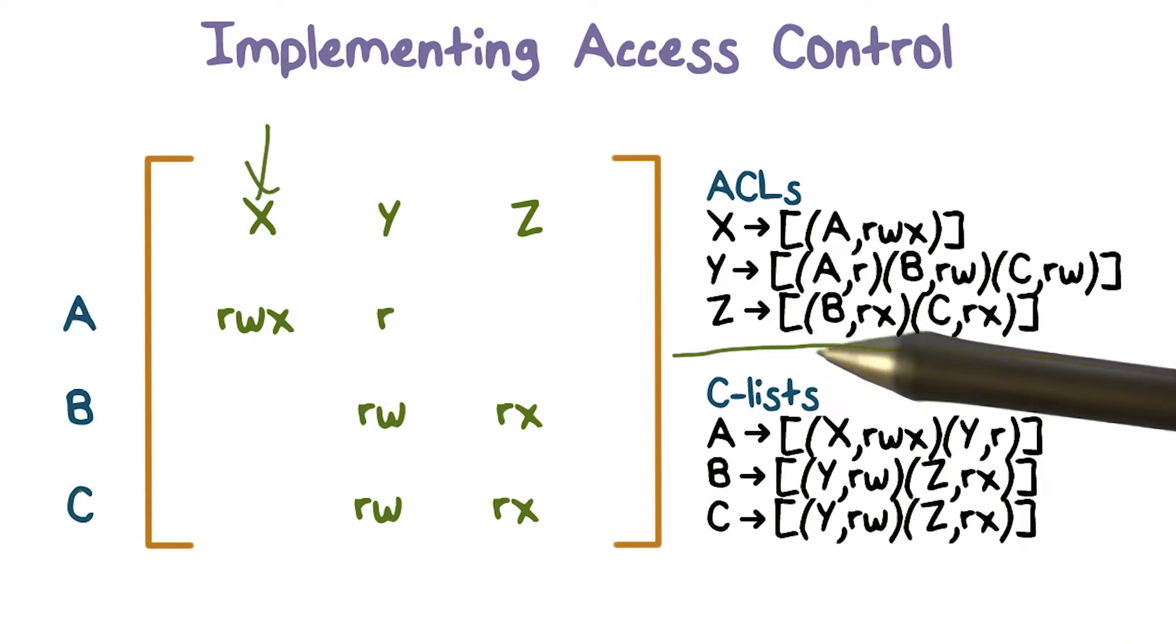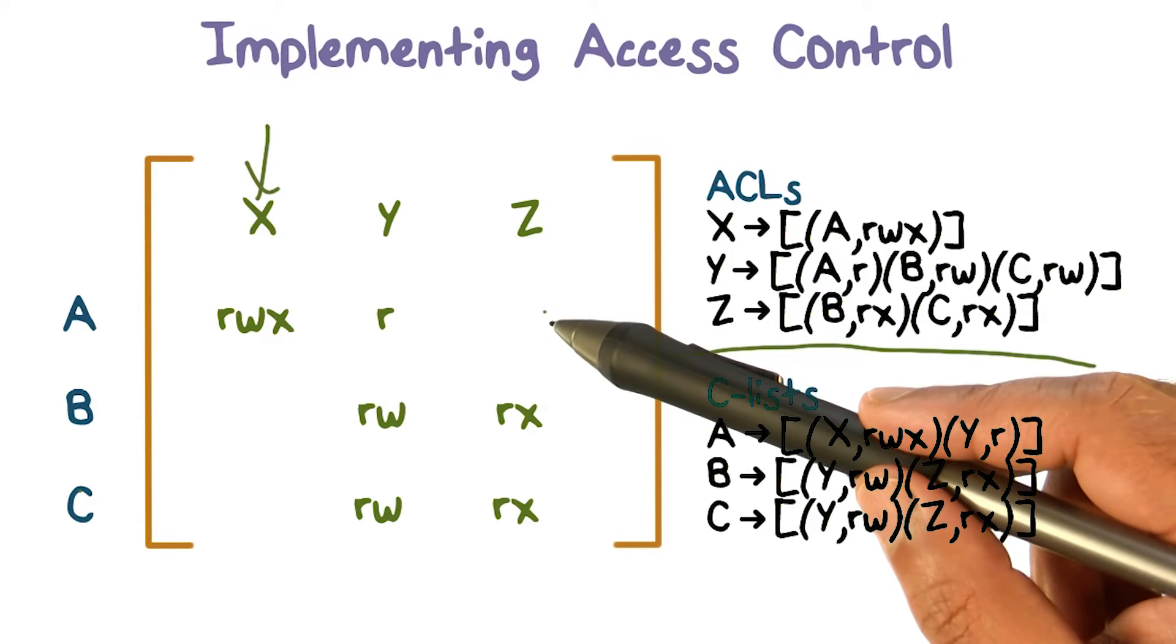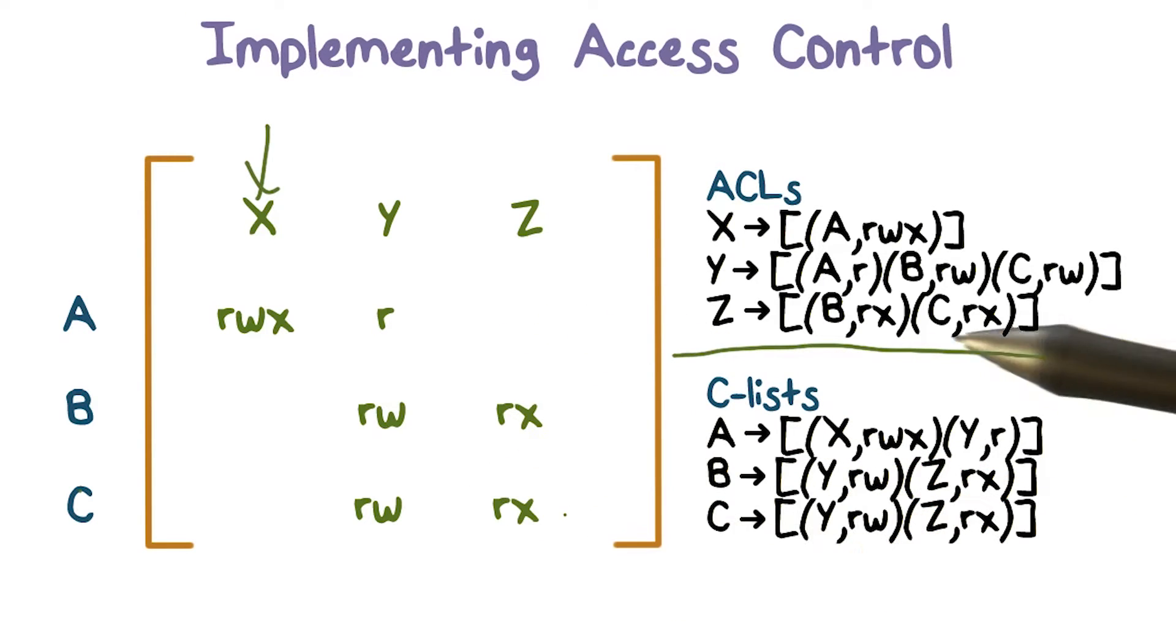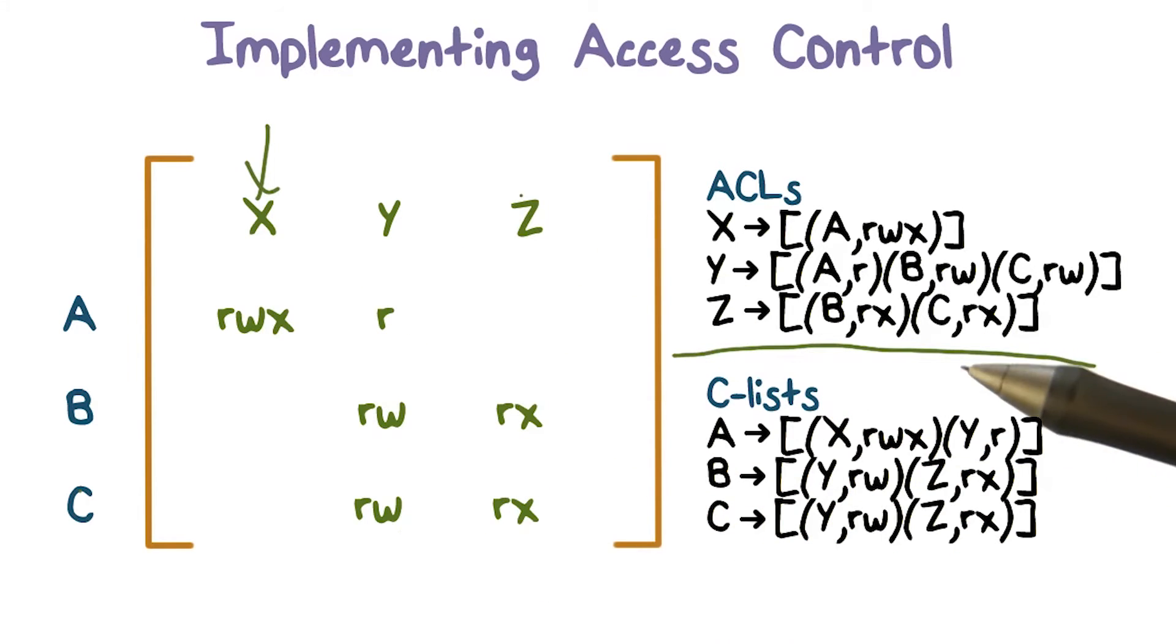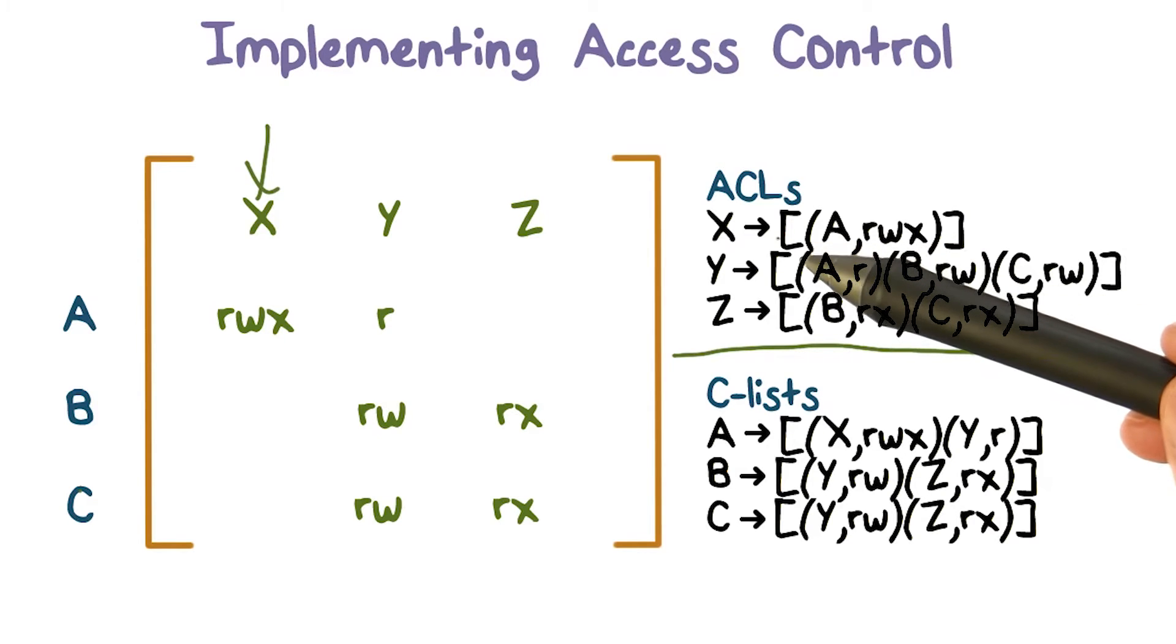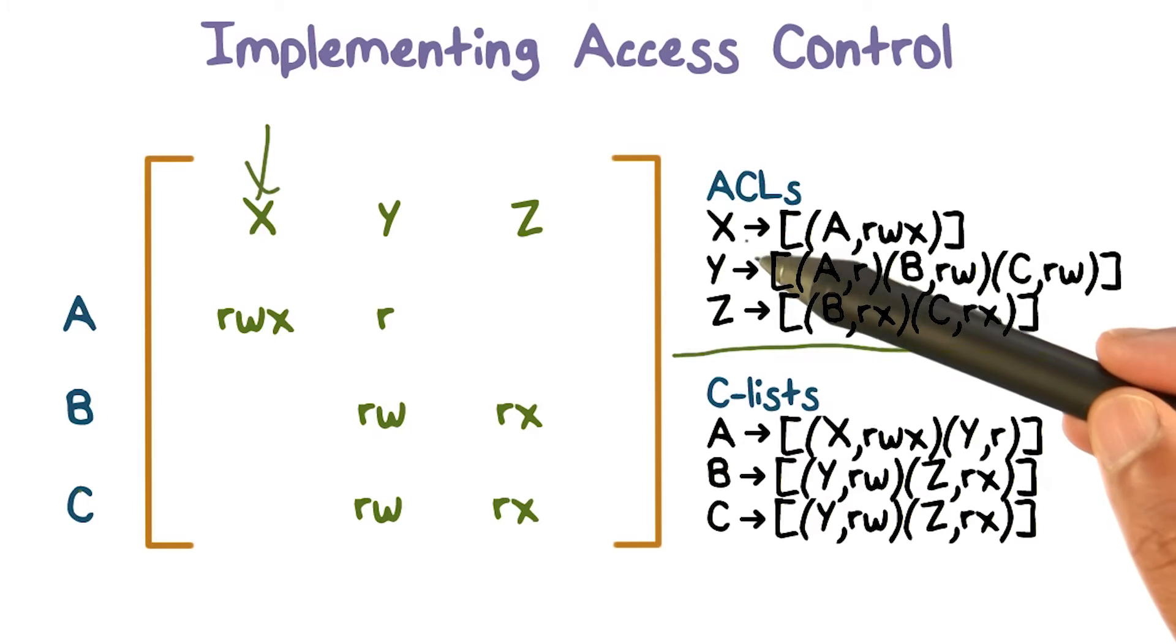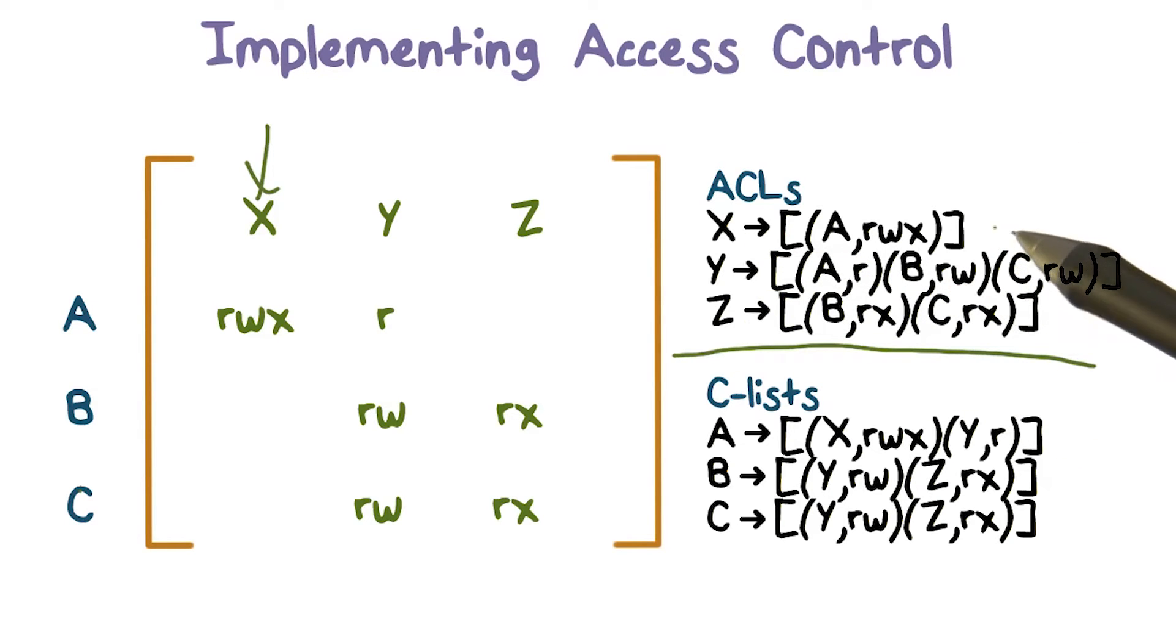Similarly, for the last resource, we're going to have two entries. A has no access, but B and C do. B can read and execute it, and C can read and execute as well. So this information in the access control matrix gets represented with three access control lists, one for each object: X, Y, and Z.